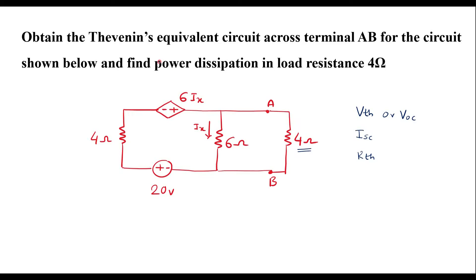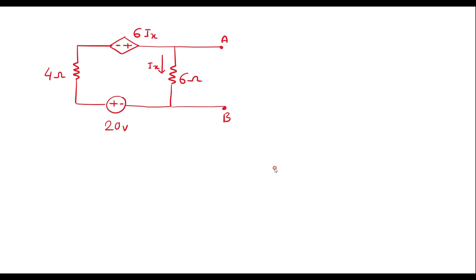First, I will try to find Vth. To find Vth, this load resistance should be removed from the circuit. So if I remove this 4 ohm resistor, terminal A and B will become open. Here I have removed the 4 ohm resistor. Now terminal A and B is open. We have to find voltage between these two terminals, which is known as Vth or VOC, the open circuit voltage.